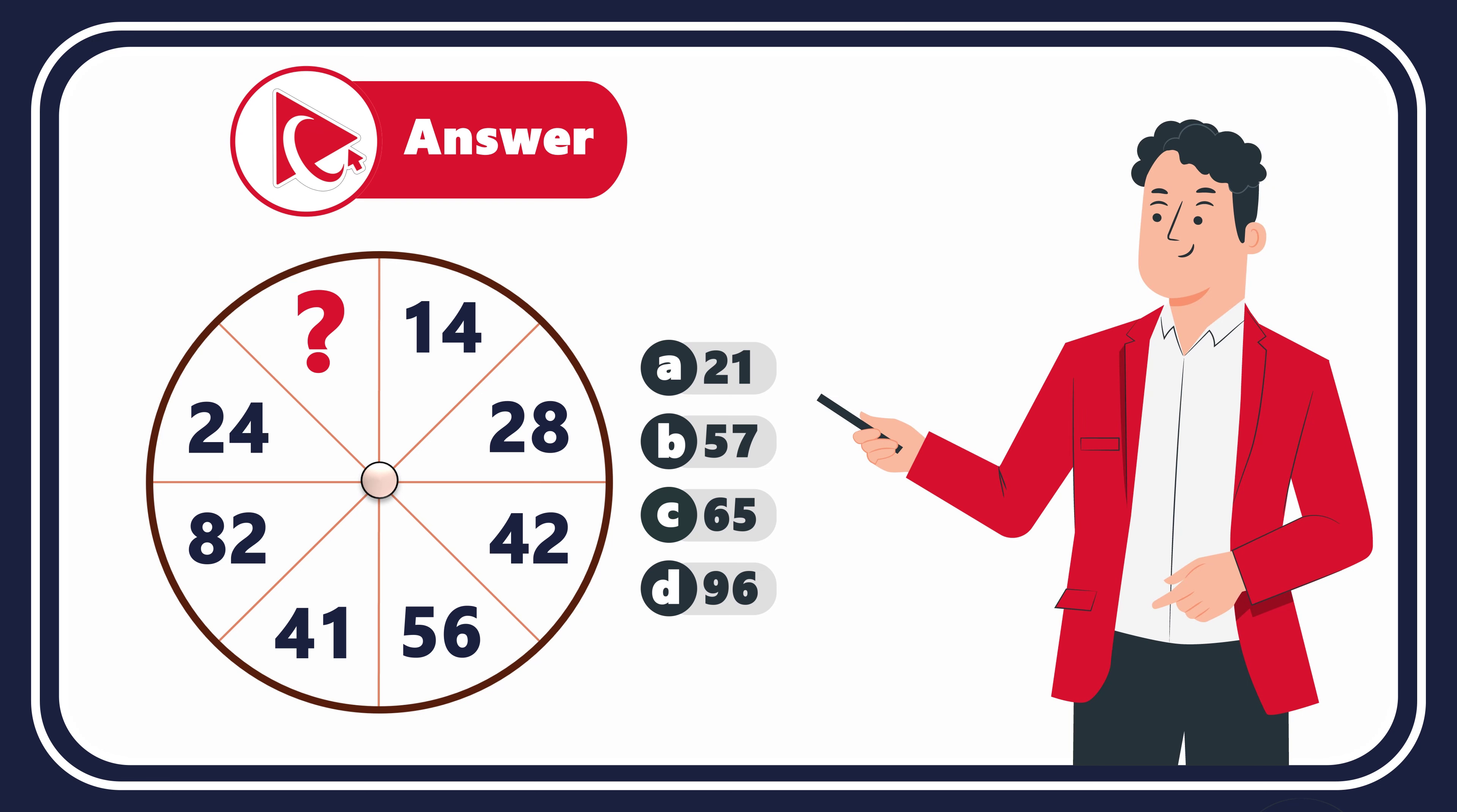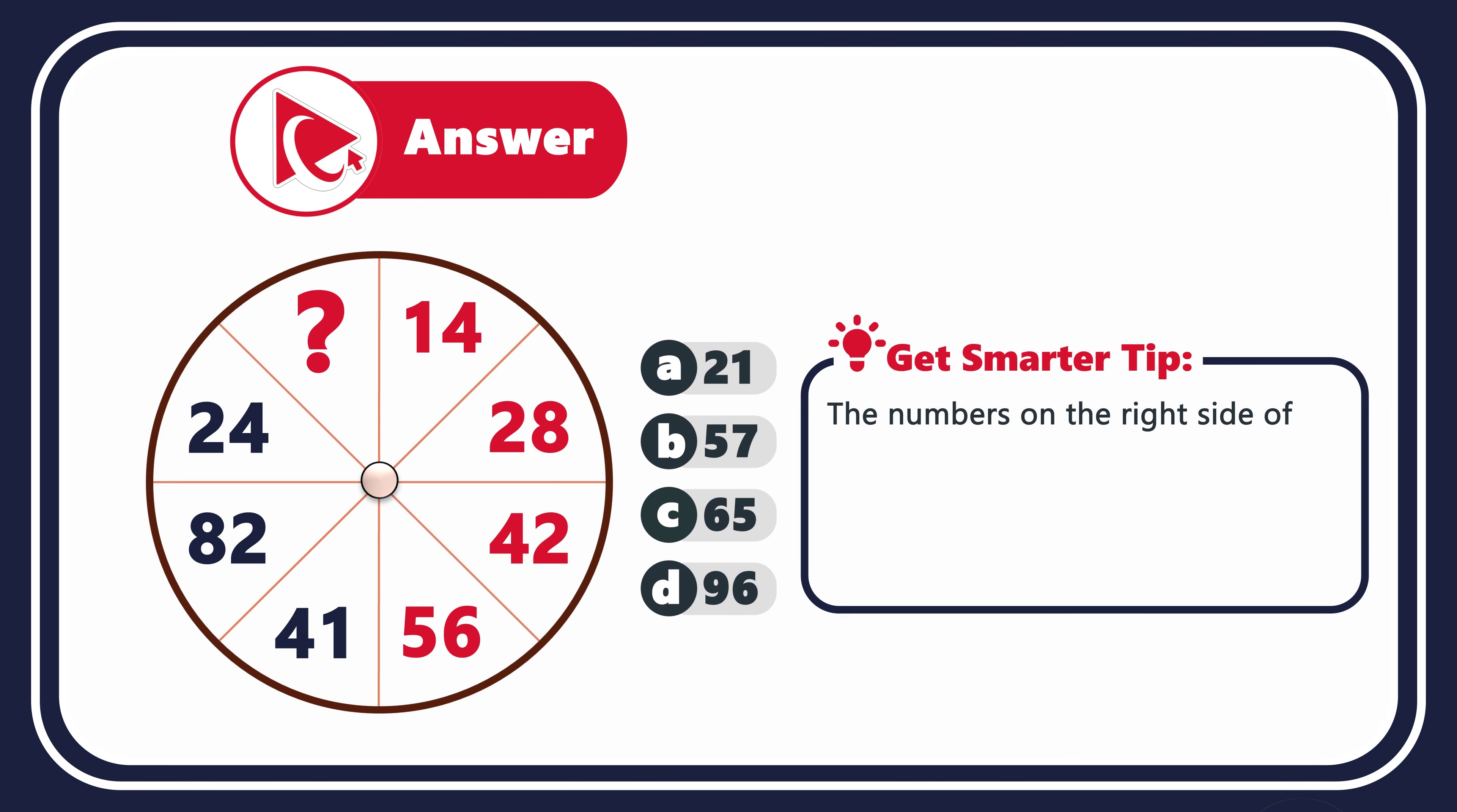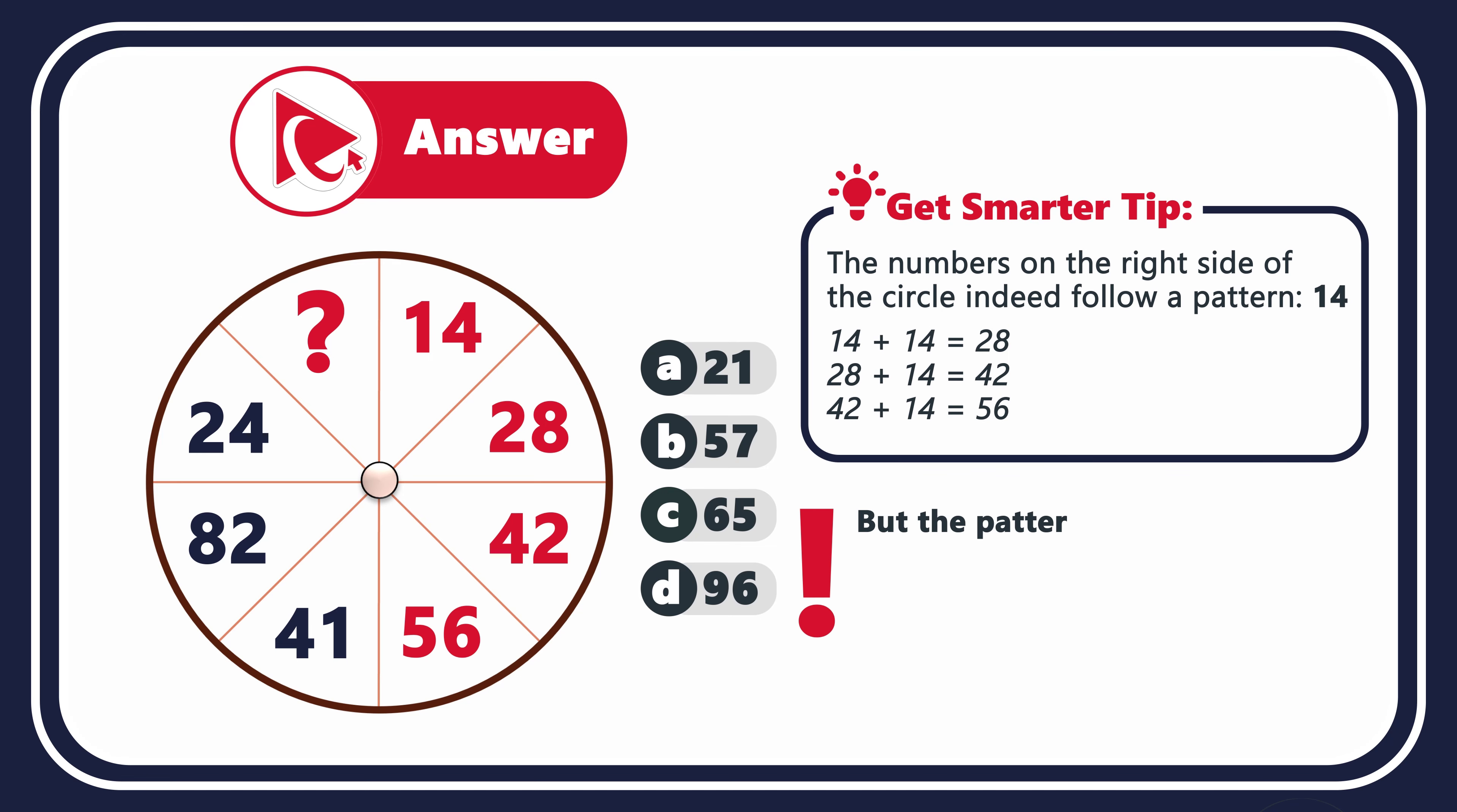Remember I told you that this question is tricky? Let's look in details why the answer is not obvious. Let's look at the numbers 14, 28, 42, and 56. As you can see, they all increase by 14. 14 plus 14 equals 28. 28 plus 14 equals 42. And 42 plus 14 equals 56. But then this pattern breaks, and you see numbers 41, 82, and 24.